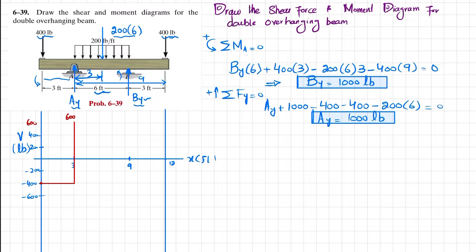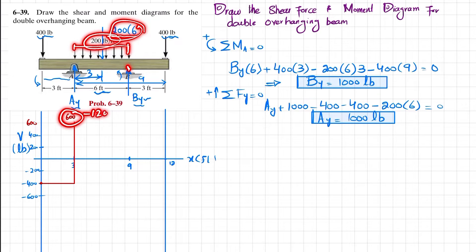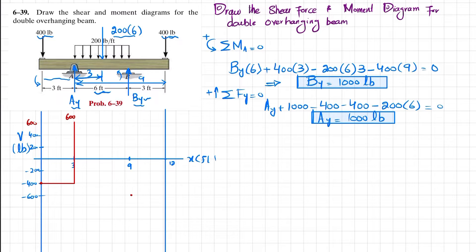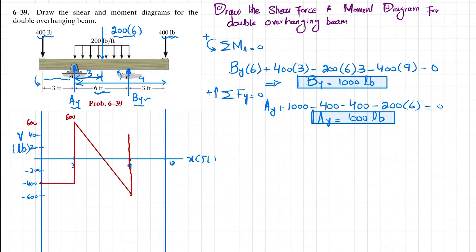Moving from point A to point B we have 200 pounds per foot, so 200 multiplied by 6 equals 1200. Therefore 600 minus 1200 gives minus 600 - we plot minus 600 at a length of 9 feet. Since the distributed load produces a linear (first-degree) shear variation, this is a straight line. At point B, By equals 1000 upward, so minus 600 plus 1000 changes the shear to plus 400.